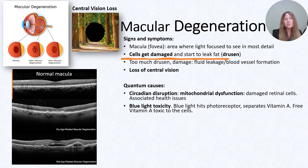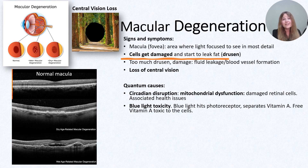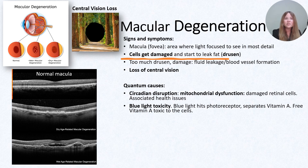Blue light toxicity is perhaps one of the biggest contributing factors to macular degeneration. When blue light hits a photoreceptor, it separates vitamin A. This free form of vitamin A is actually super toxic to our cells and it causes significant damage. DHA, which are our healthy fat cells, is also damaged by blue light. So the cells end up getting leaky, and this causes those lipid deposits to clog up the cells and cause central vision loss.